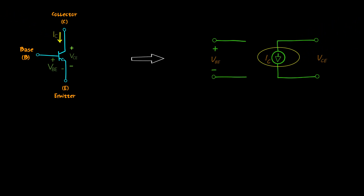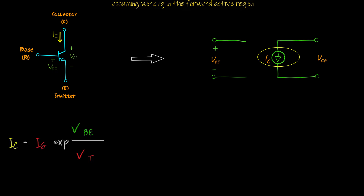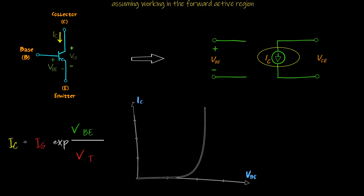The output current, or the current flowing from the collector to the emitter, is governed by this equation. As the base-emitter voltage is kept constant, the current from the collector to the emitter is a constant value that doesn't depend on the collector-emitter voltage — a voltage-controlled current source whose value depends only on VBE. IS and VT are constants.